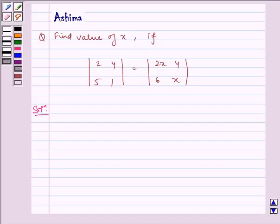Hello and welcome to the session. Let us understand the following problem today. Find value of x if determinant |2 4; 5 1| is equal to determinant |2x 4; 6 x|.